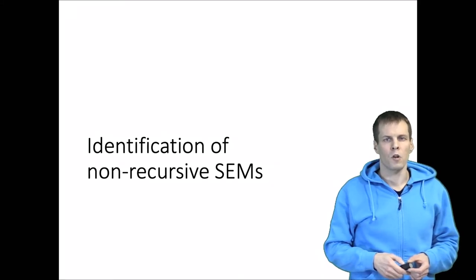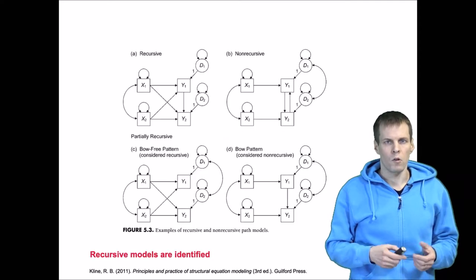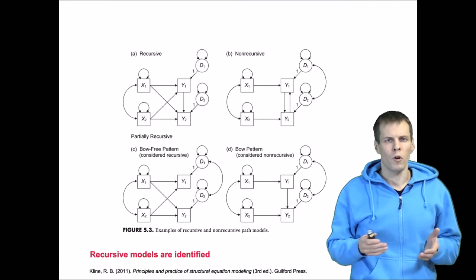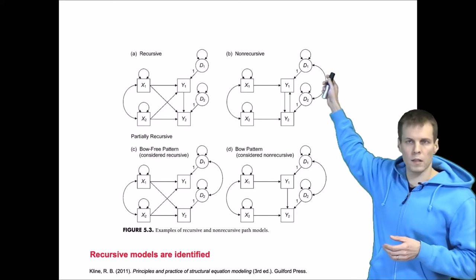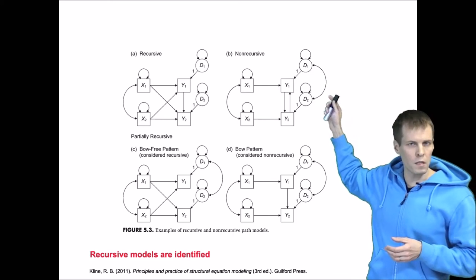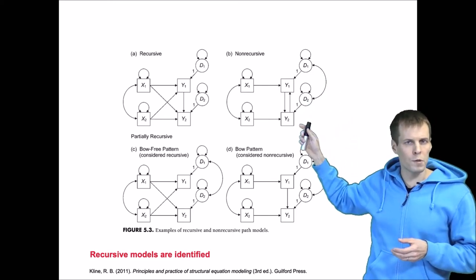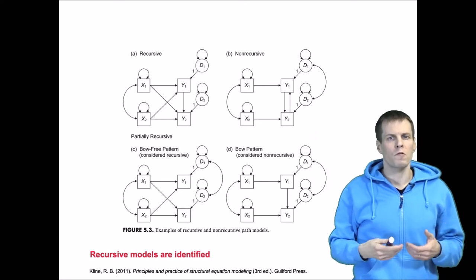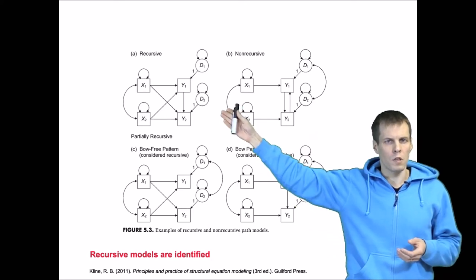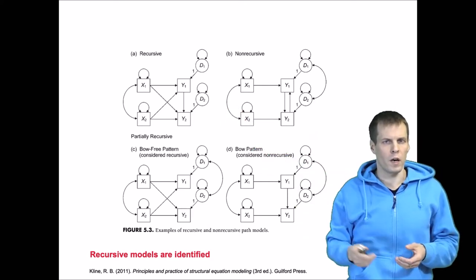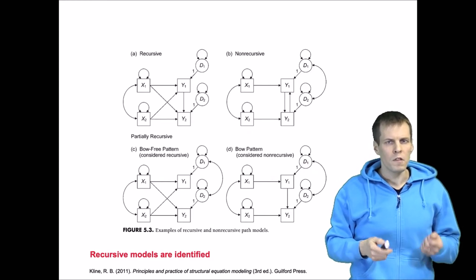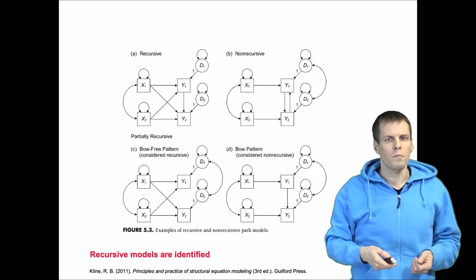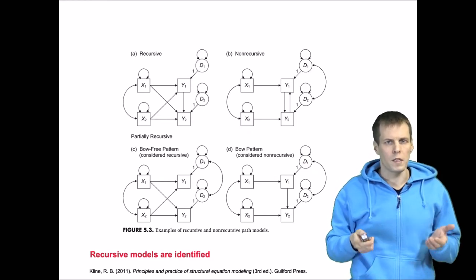Establishing the identification of non-recursive SEM models can be a challenging task. Non-recursive models are models that have either correlated disturbances or feedback loops between two or more variables. They can be contrasted to recursive models that don't have either of these features. Recursive models are simple to identify because they are always identified.